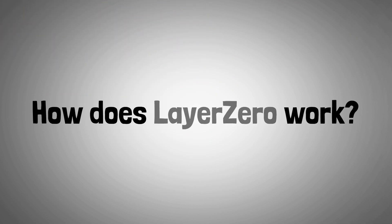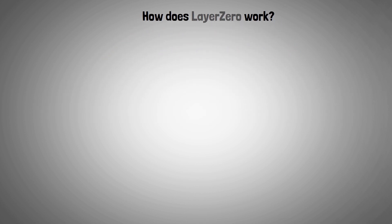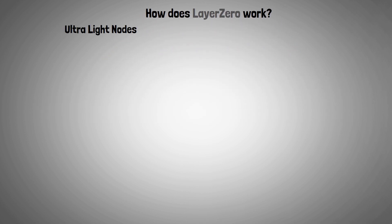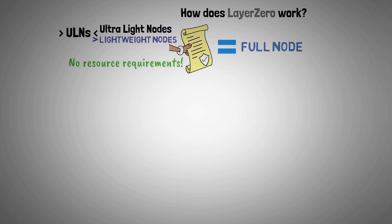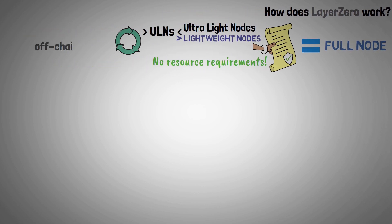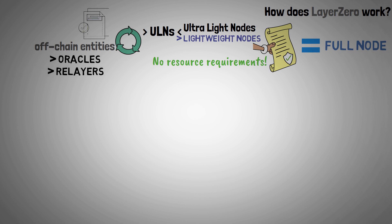Now let's look at how exactly Layer 0 works. Ultra-light nodes, or ULNs, offer the same security assurances as full nodes but without the resource requirements. To do this, they rely on off-chain entities — oracles and relayers — to validate transactions and carry out complex computations.